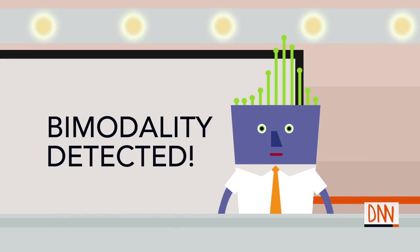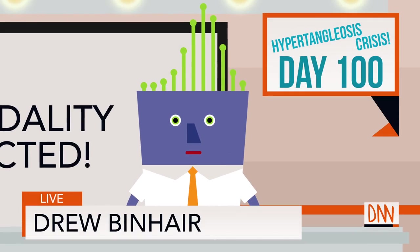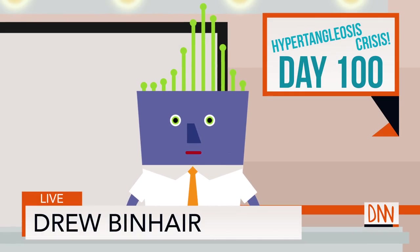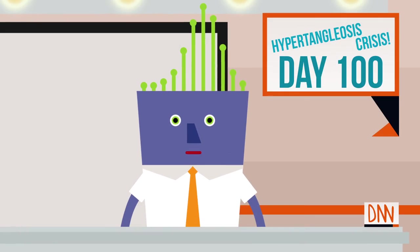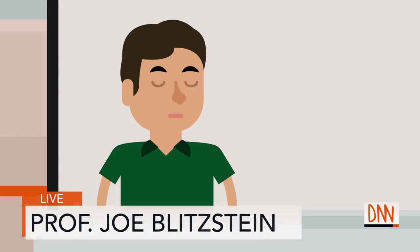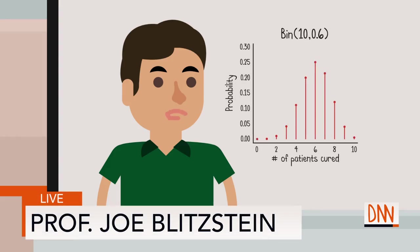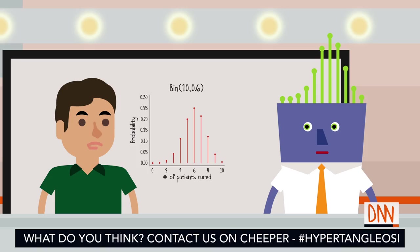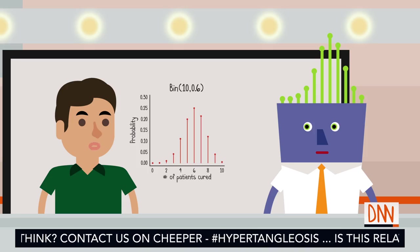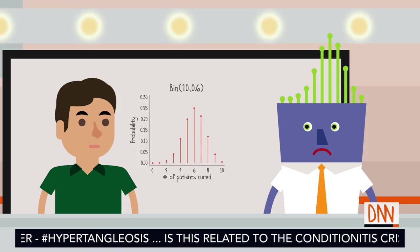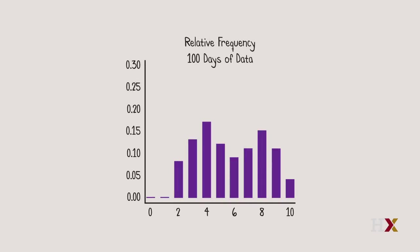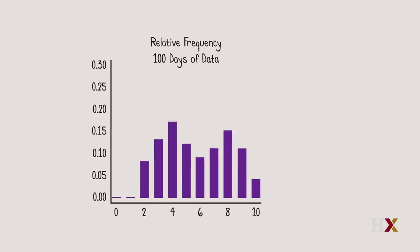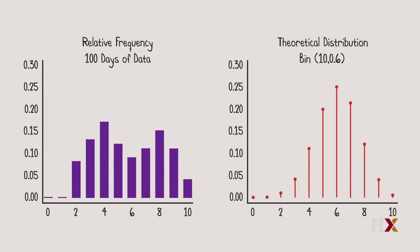Breaking news! This is Jen — bimodality detected. Day 100 of our continuous coverage of the hypertangulosis crisis has brought us a shocking statistical development. We go to Professor Blitzstein for more. A few months ago, I suggested the binomial distribution as a plausible model for how many patients will get cured on a given day. Now, with much more data, it has become clear that the binomial model is inadequate. Here's a histogram of how many patients were cured in a day, compared with the binomial(10, 0.6) distribution. As you can see, they look very different. We have a case of bimodality.